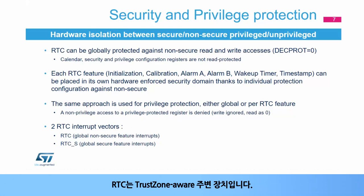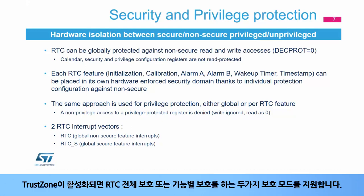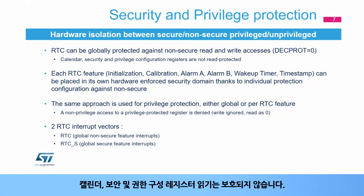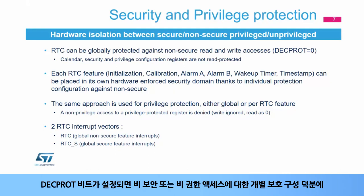The RTC is a TrustZone-aware peripheral. When TrustZone is enabled, two protection modes are supported: global protection or per-RTC feature protection. When the DEC PROT bit is cleared in the RTC-SM-CR register, writing the RTC registers is possible only in secure mode. Calendar, security and privilege configuration registers are not read protected. All other RTC registers can be read only in secure mode. When the DEC PROT bit is set, each RTC feature — initialization, calibration, alarm A, alarm B,